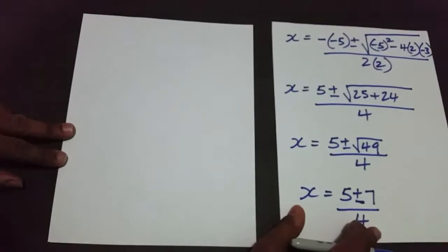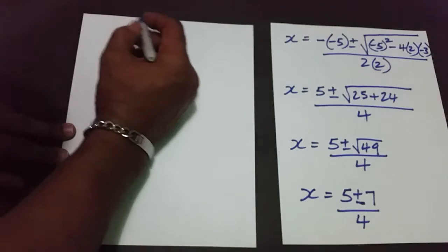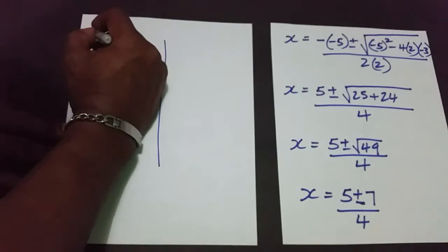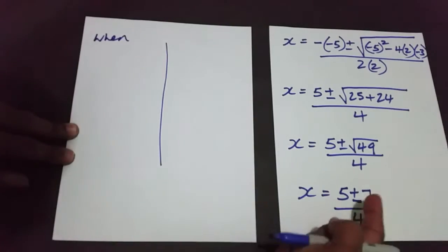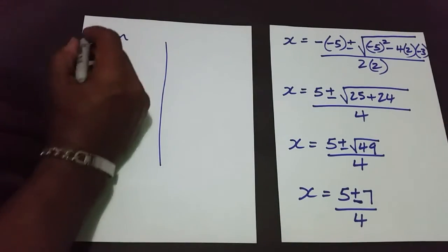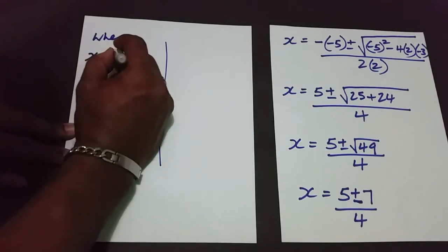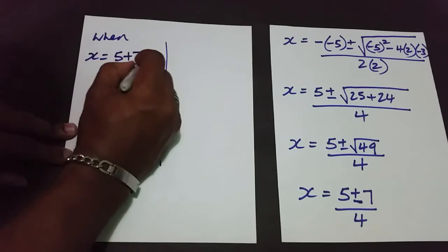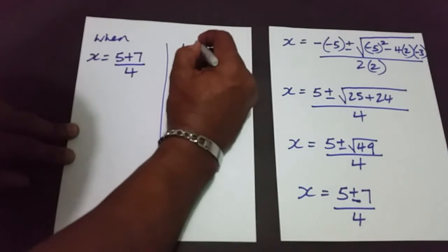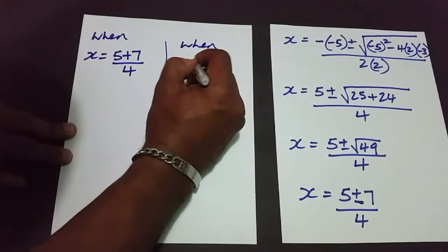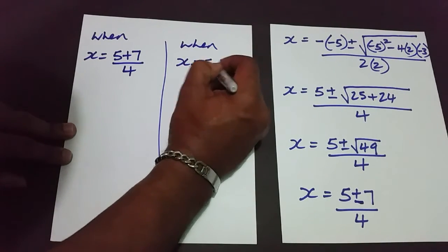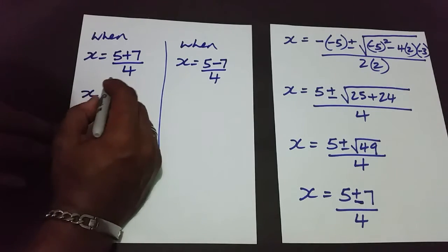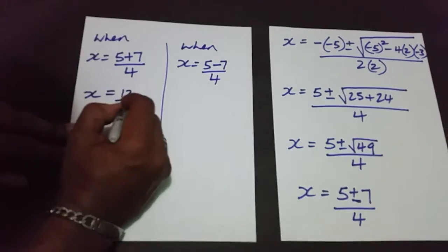That is the whole essence of this — breaking off to get our two answers. So in one instance we're going to use the positive: x equals 5 plus 7 over 4. And in the other, x equals 5 minus 7 all over 4.